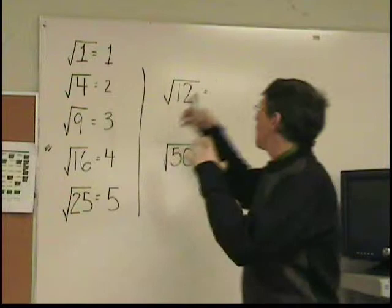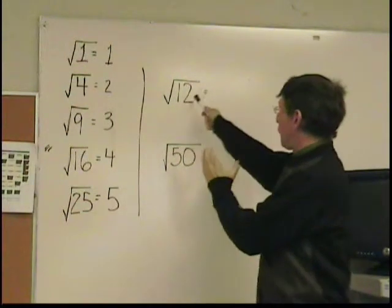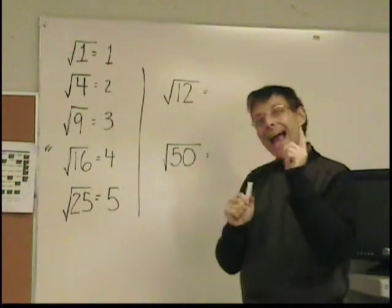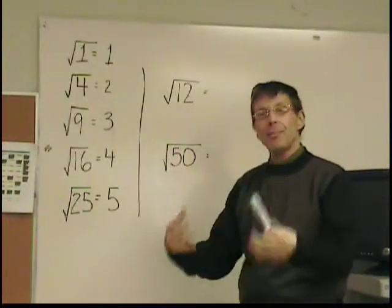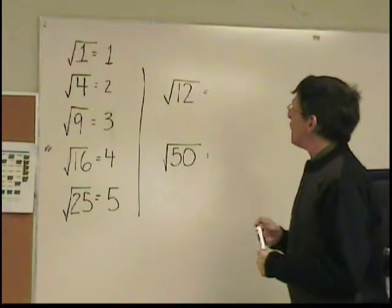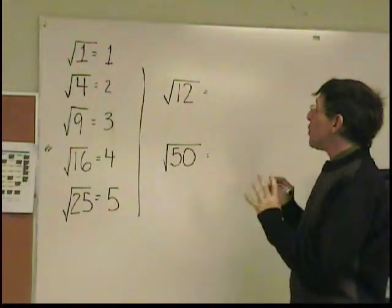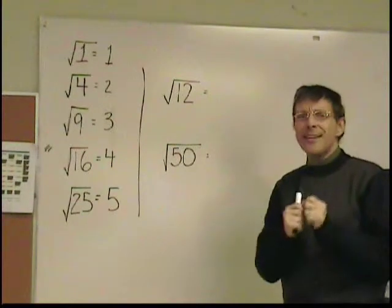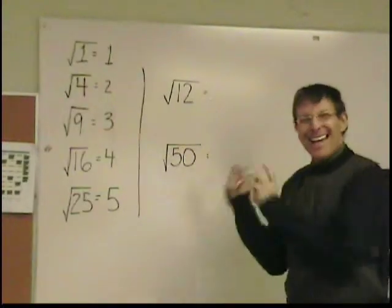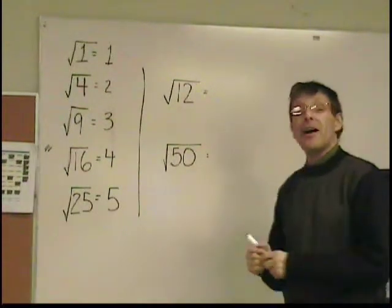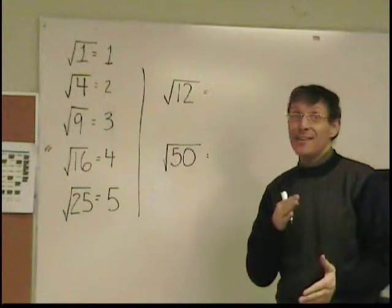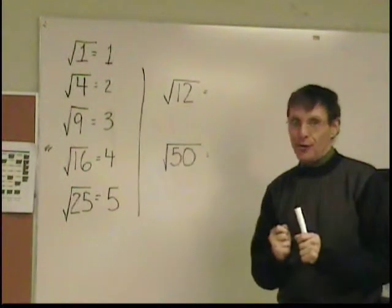What happens when you have the square root of a number that's not a perfect square? Well, what you have to do is you have to simplify. You have to break it down. For example, the square root of 12, you look for the factors of 12. And we want to see if we can get a factor that is a perfect square inside 12. So we could try 6 and 2, but that won't help us because neither 6 nor 2 are perfect squares.